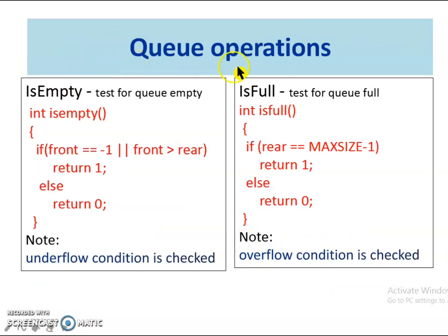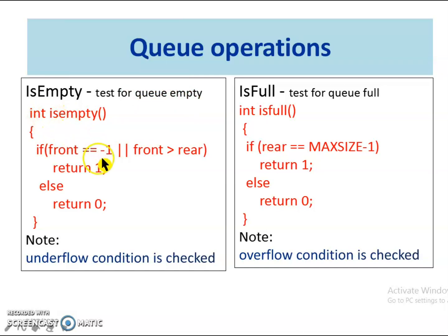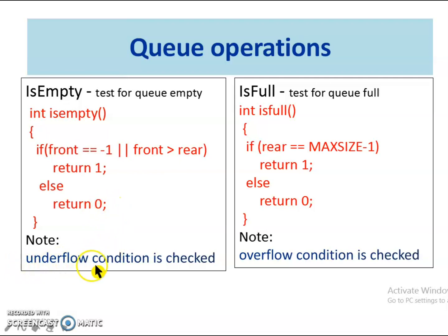Next, let us see the queue operations. The isEmpty function checks whether the queue is empty or not. As the queue is declared as an array, we can store elements starting at index 0. We set the index as minus 1 to indicate the queue is empty. Hence, the function returns true when the queue is empty, else it returns false. The queue empty condition is also called the underflow condition.